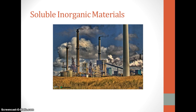Soluble inorganic materials include inorganic chemicals coming mainly from industry. These may include, but not be limited to, heavy metals such as lead, arsenic, mercury, and copper ions; ammonia; acids such as sulfuric acid and nitric acid from acid deposition and from industry; and bases such as caustic alkalines.